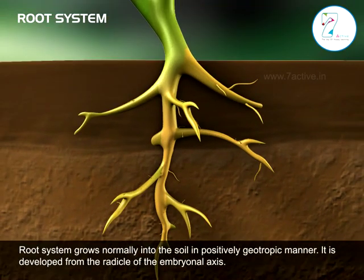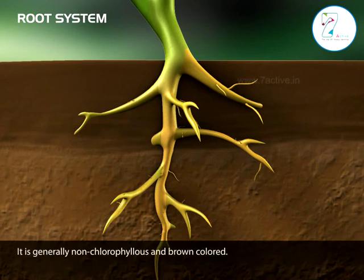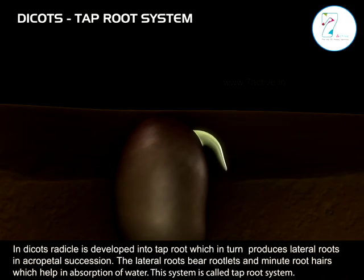Root system grows normally into the soil in a positively geotropic manner. It is developed from the radical of the embryonal axis. It is generally non-chlorophyllous and brown coloured. In dicots,